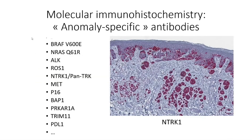Secondly, in the setting of molecular pathology, we have some anomaly-specific antibodies. Here, for example, is NTRK1, a specific antibody in a spitz tumor. Here is a partial list of some of the antibodies that can be used in this setting. They will be detailed in another video.